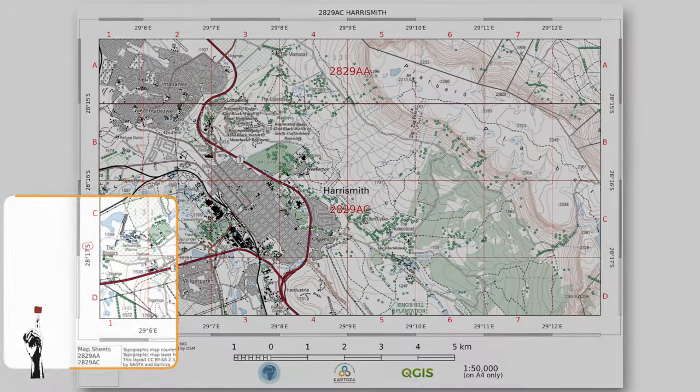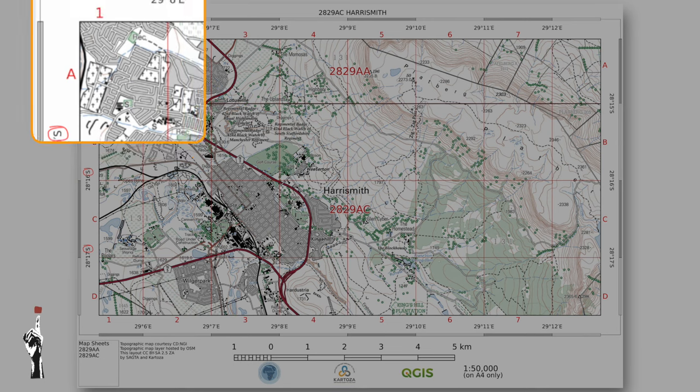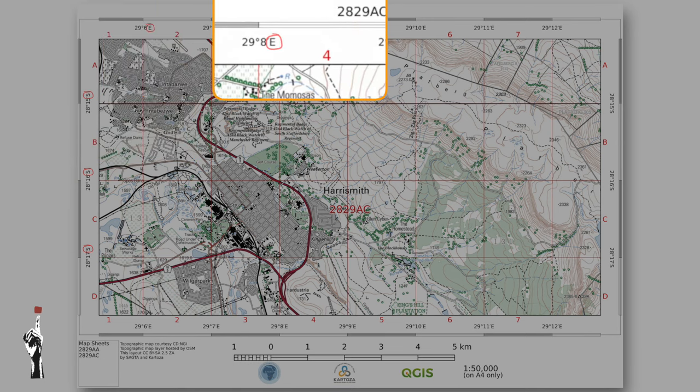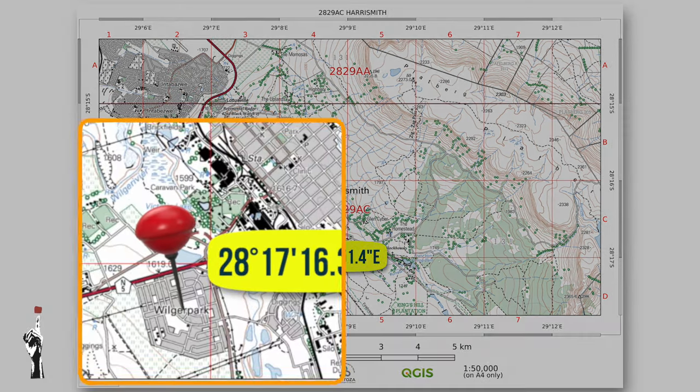On South African maps, the latitude always indicates degrees south and the longitude always indicates degrees east. This is because South Africa is in the Southern Hemisphere — we are below the equator — so our latitude is always south. We are also located east of the Greenwich Meridian, which is why our longitude is always east. Coordinates describe exact location on the earth.